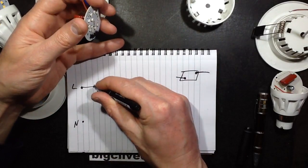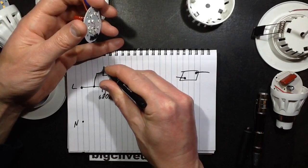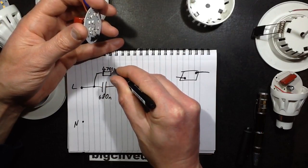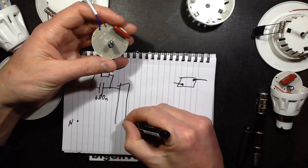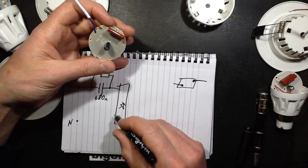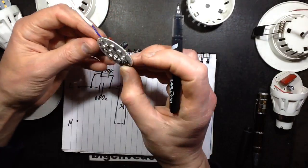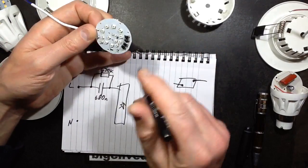So that's a 470 nano farad capacitor, 470K resistor across the 680 nano farad. It's through a discrete bridge rectifier. I'm guessing the neutral then is just going straight to the rectifier. Yes, it is.